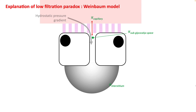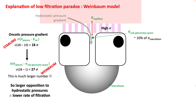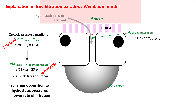So the oncotic pressure gradient is not really between plasma oncotic pressure and interstitial oncotic pressure, but between the capillary and the sub-glycocalyx space. Since the amount of protein in the sub-glycocalyx space is very low, the oncotic pressure gradient is much higher. If you substitute the sub-glycocalyx oncotic pressure into the equation instead of the interstitial oncotic pressure, the oncotic pressure gradient is significantly higher, which increases the opposing force and decreases net flow.